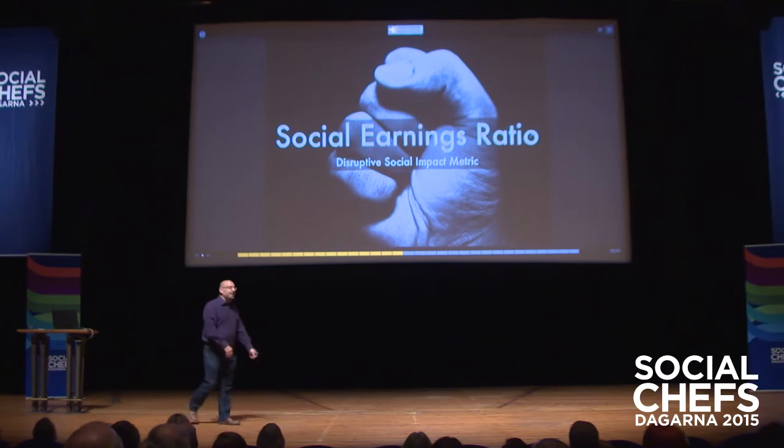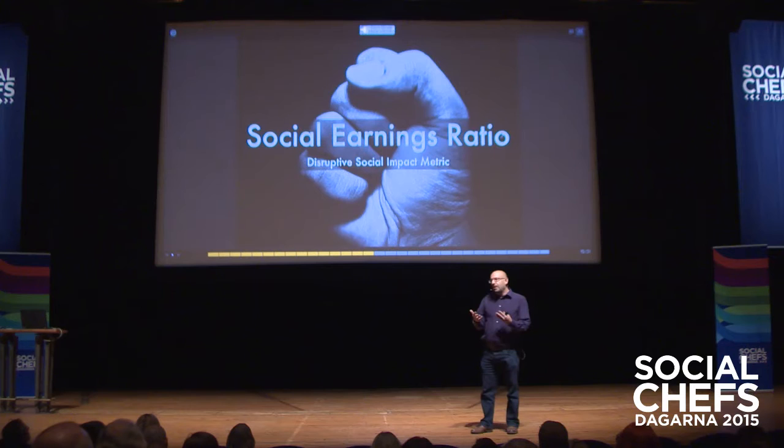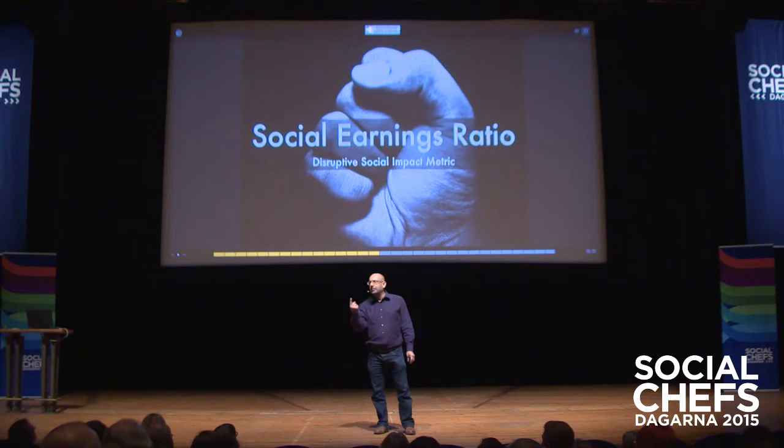We came up with a metric called the Social Earnings Ratio. The one-number index of financial value is the Price-Earnings Ratio, the P/E ratio. We knew that to deliver social currency, the social value, we had to come up with a one-number index — because the public doesn't understand lots of KPIs. Total value is financial value plus social value.